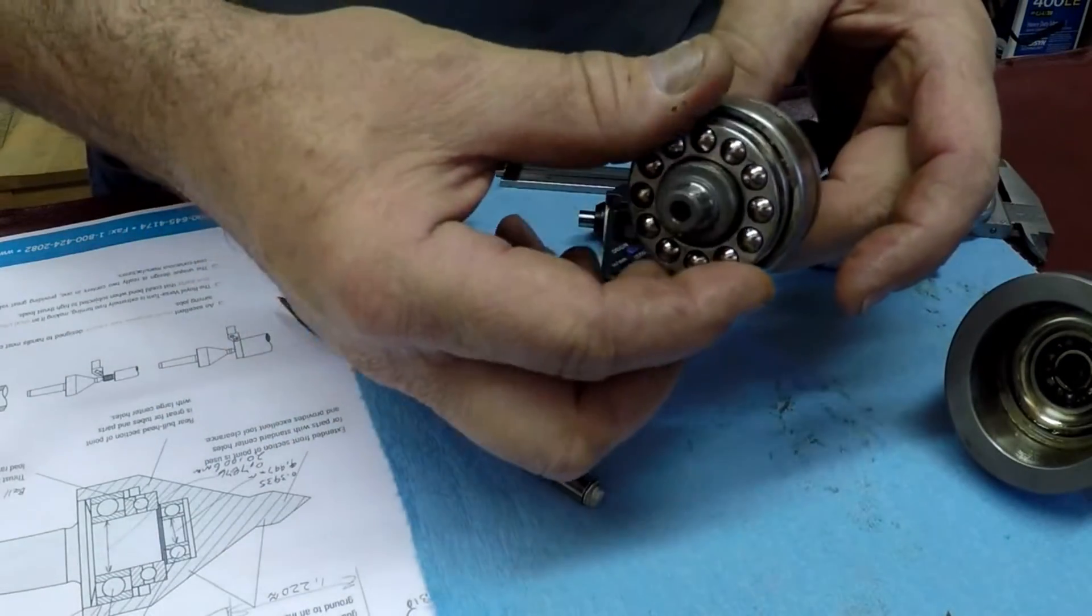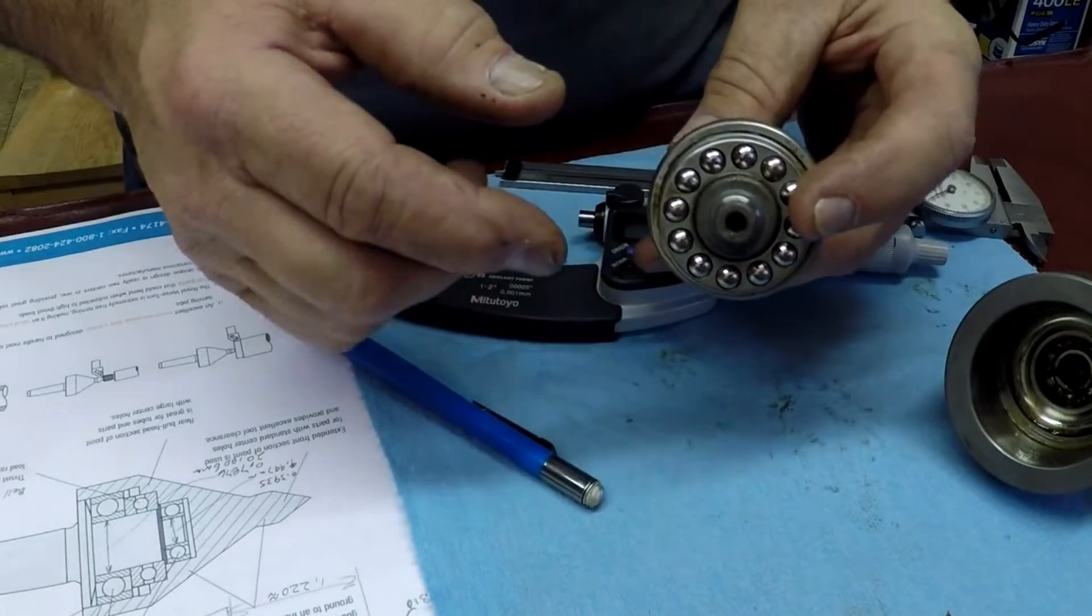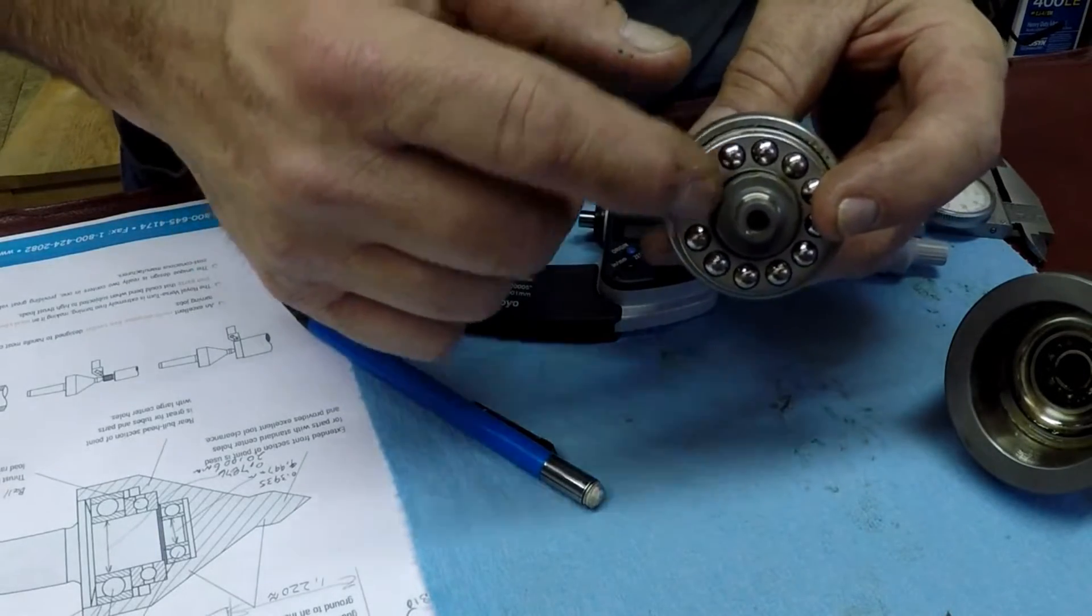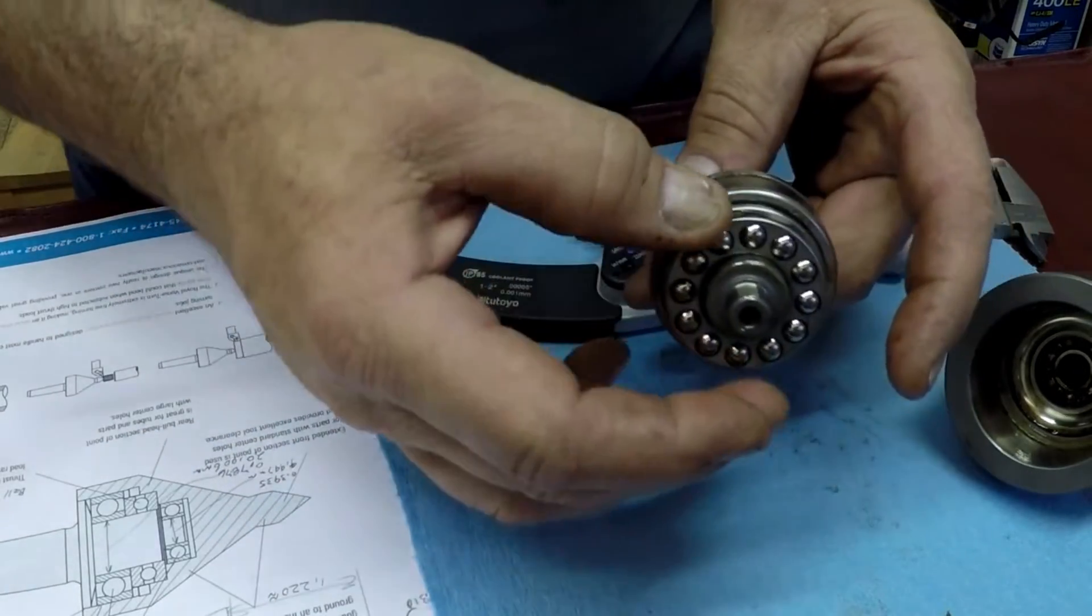So there's two of those, and the balls, this sits in here. And the balls are 0.281 in diameter. So that thrust bearing is a little bit thick.